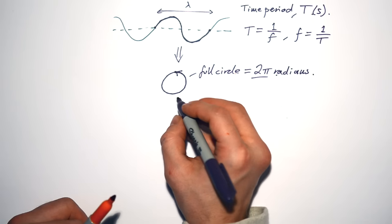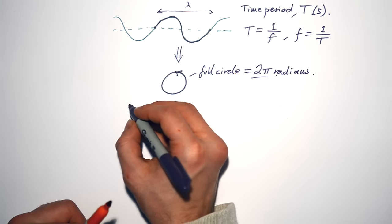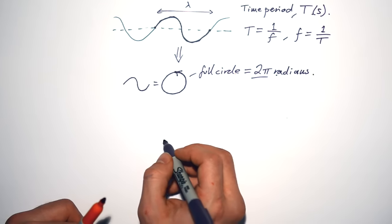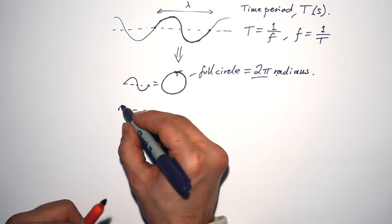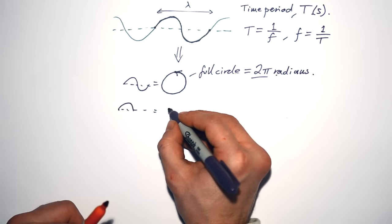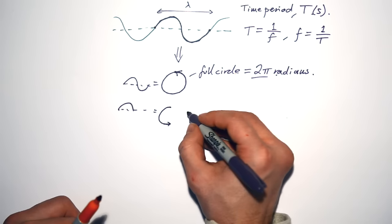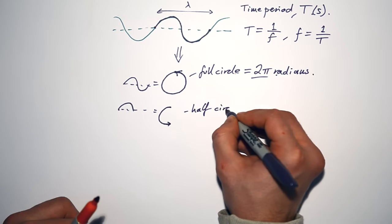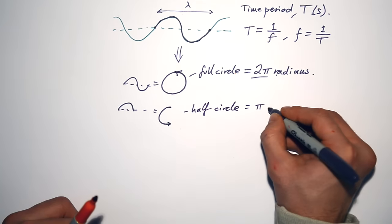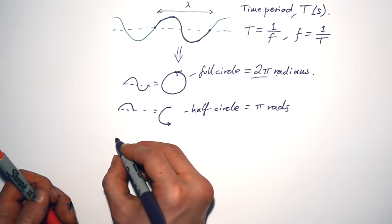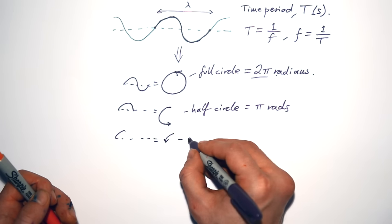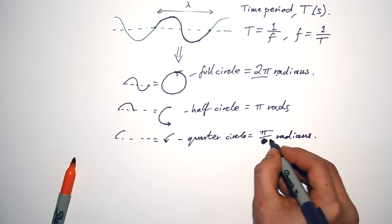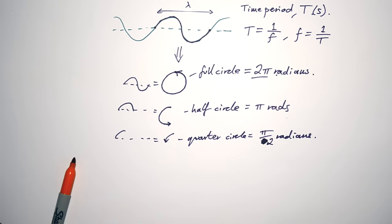What about if we have a wave that only goes halfway? A half wave is the same as going halfway around a full circle — that's just π radians. What about a quarter wave? That's the same as a quarter of a circle, giving us π/2 radians. And an eighth of a circle would give you π/4 radians.